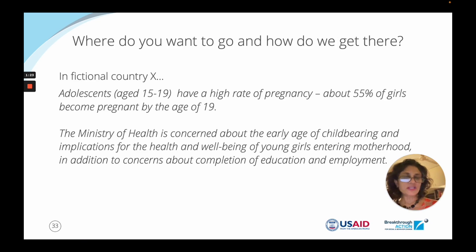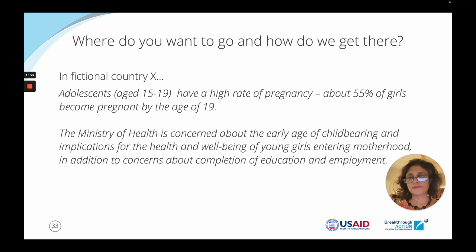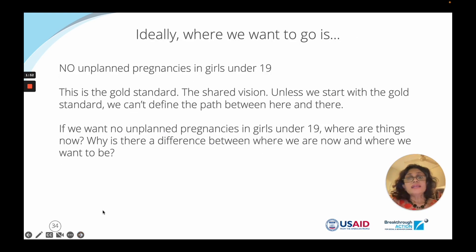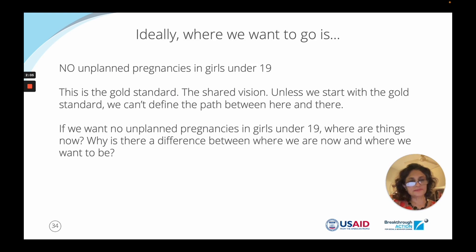Think about fictional country X, where adolescents aged 15 to 19 have a high rate of pregnancy — about 55% of girls become pregnant by the age of 19. The Ministry of Health is concerned about early childbearing and its implications for health, wellbeing, completion of education, and employment opportunities. Ideally, where we want to go — thinking big sky — is no unplanned pregnancies in girls under 19. That could be our gold standard, our shared vision.